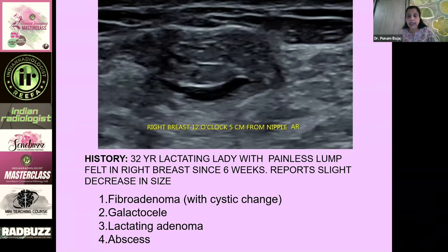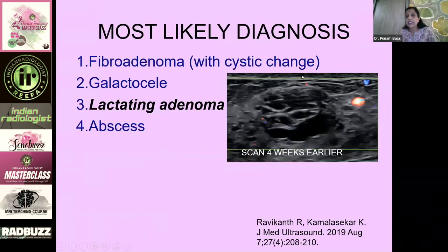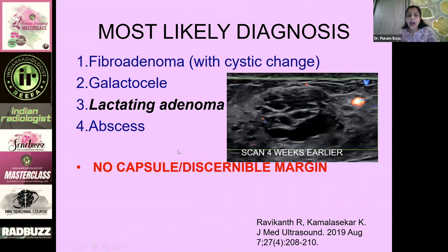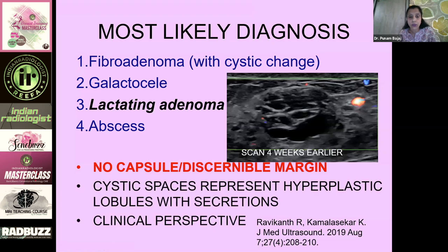The majority feel this is a lactating adenoma, and that is absolutely correct. Looking at the scan from four weeks earlier, you see many cystic spaces — these are just hyperplastic lobules in the duct filled with secretion, and the echogenic lines are the intervening connective tissue. A lactating adenoma has no capsule — you never see a discernible margin. A galactocele will show a thin smooth margin. A fibroadenoma will show a thicker capsule. For excluding an abscess, you need to take everything in a clinical perspective.